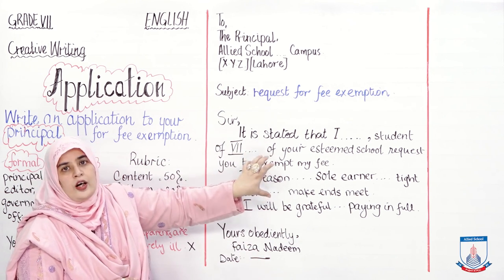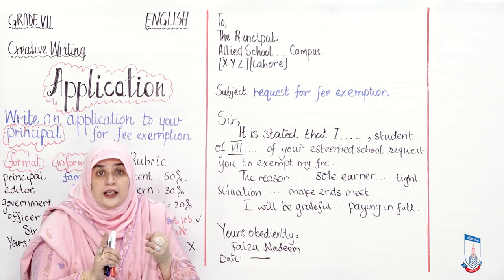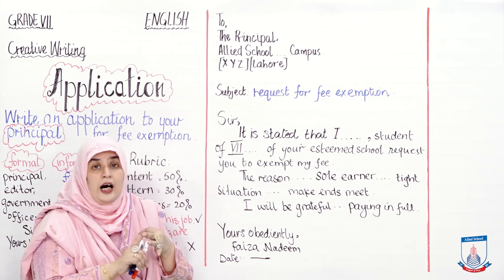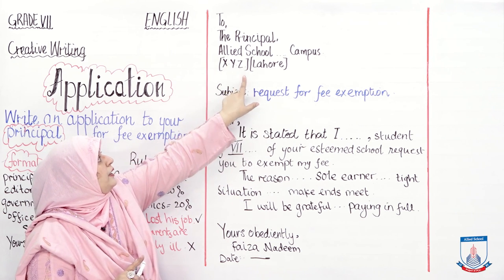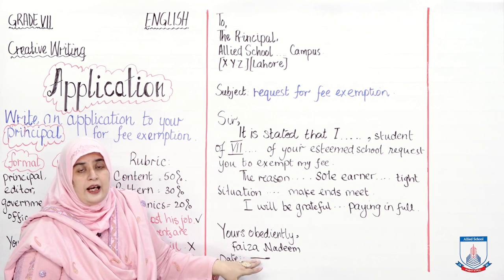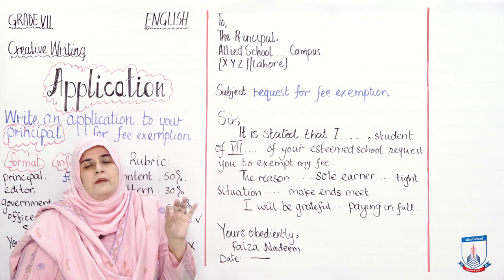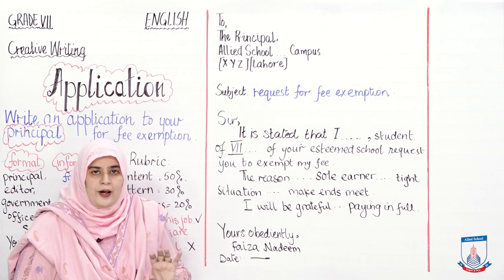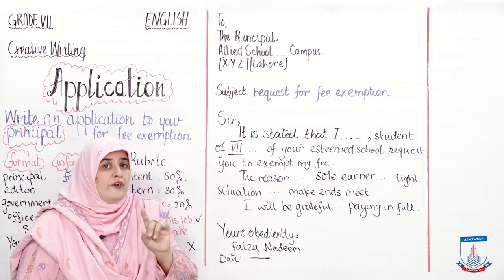Key things to remember: do not write 'Dear'; do not write 'Yours Truly'; do not ask personal questions; go straight to the point. Write the subject line. Use commas and full stops properly. Write 'Yours Obediently' and include a hypothetical date. Keep your writing short, crisp, and to the point — skim and scan format. This is a formal letter, so no informal language.